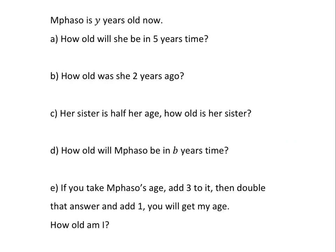One last quick example. Mbasu is y years old now. How old will she be in five years time? Well, the answer to that is if she's y years old now, it'll be y plus 5. And sometimes we can feel a bit uncomfortable because, you know, we ask how old is the person. You want to give them a single number as an answer. But in algebra, we'll often have expressions as the answer.